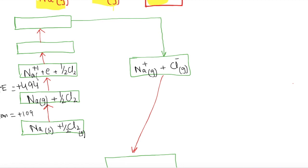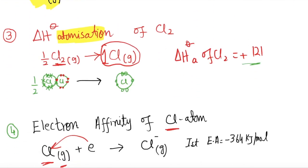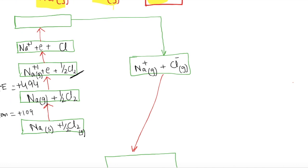The next target is to convert the chlorine molecule into an isolated gaseous chloride ion. First, the chlorine molecule is converted to atomic form. Half a mole of Cl₂ provides energy to break the covalent bond, forming one mole of chlorine atoms. This is atomization — always endothermic — requiring +121 kJ/mol.